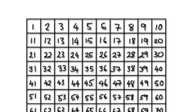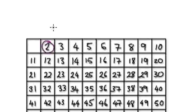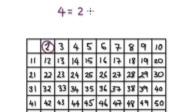So the first one — let's just say 0 is not a prime. The first prime would be 2. So 2 is a prime. Now, if 2 is a prime, then 4 cannot be a prime because you can write 4 as 2 times 2. So 4 is not a prime.